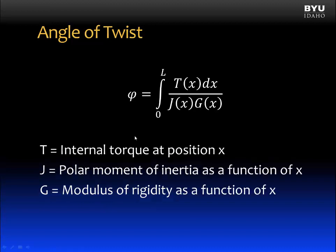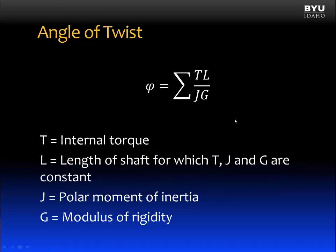Another form of the angle of twist equation is shown. The angle of twist is equal to the integral from 0 to L of the internal torque as a function of x times dx, divided by the polar moment of inertia as a function of x and the modulus of rigidity, also as a function of x.